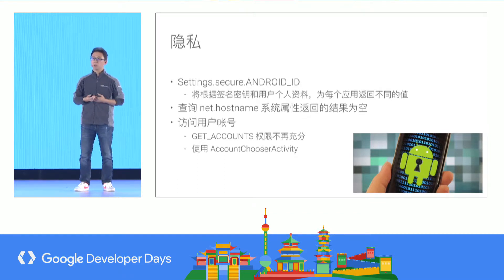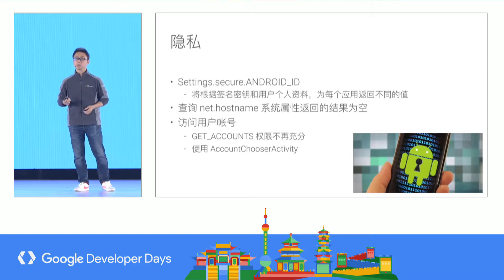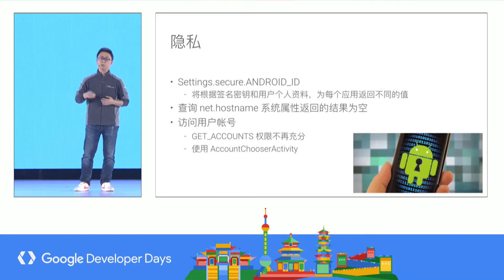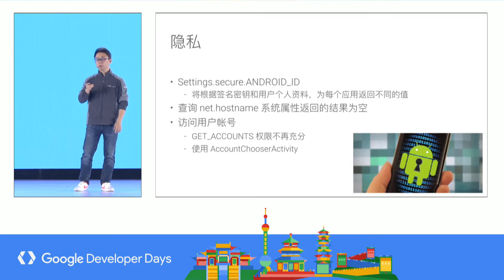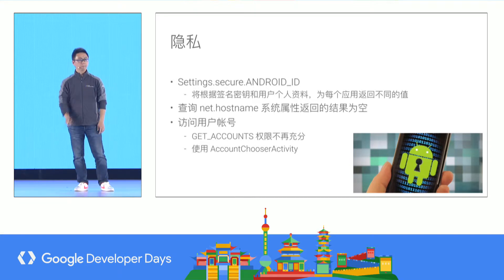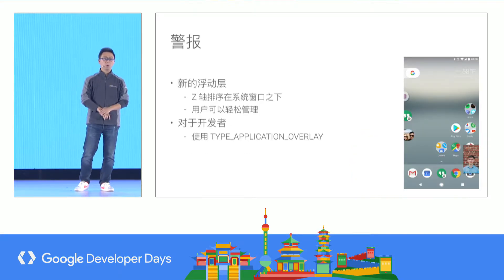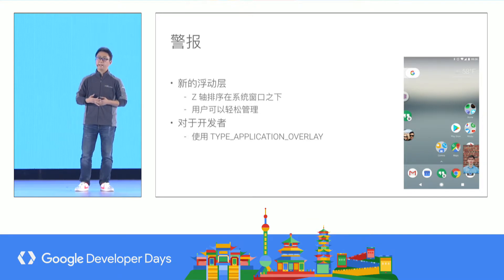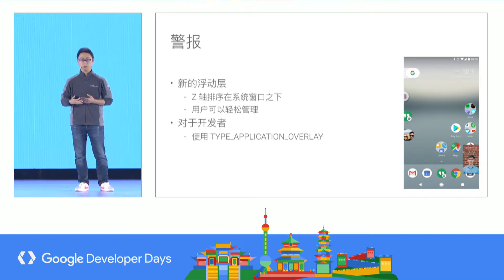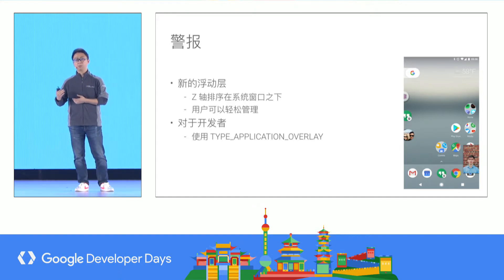Now, if you want to get account information, the GET_ACCOUNTS permission is no longer sufficient. You have to use the account chooser activity for the user to choose which account they want to grant access to. For alerts, there is a new floating layer type, TYPE_APPLICATION_OVERLAY, which should be used on top of all applications.